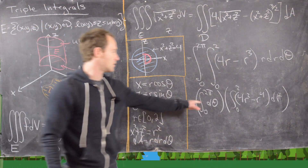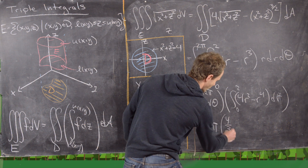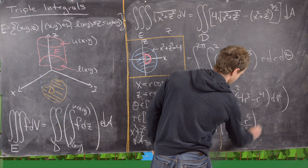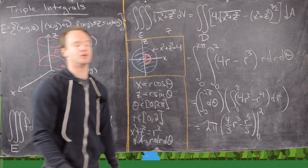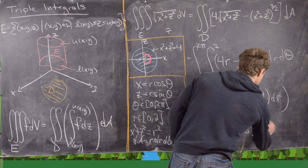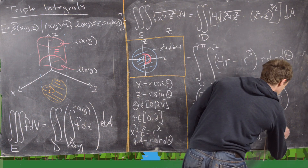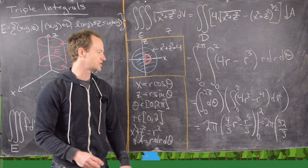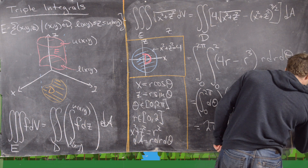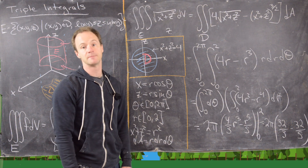The theta integral gives 2π. For the r integral, we get 2π times [4r³/3 − r⁵/5] evaluated from 0 to 2. Plugging in r = 2: 4·8/3 − 32/5 = 32/3 − 32/5. So the final answer is 2π·(32/3 − 32/5), and from there it's simple arithmetic. That's the end of the video.